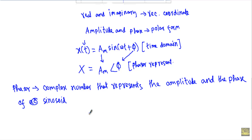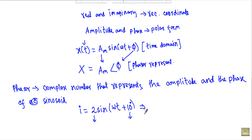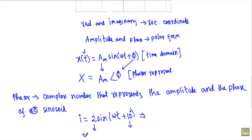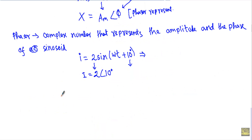For example, given the current equation i = 2·sin(ωt + 10°), the current is a function of time. To express this current in phasor form, we simply take the amplitude (maximum value) and the phase. So the phasor representation of this current is I = 2∠10°.